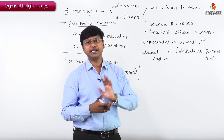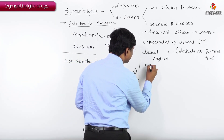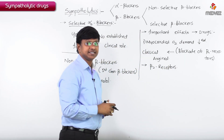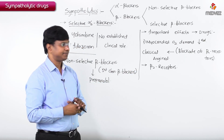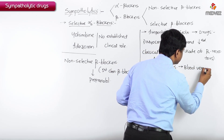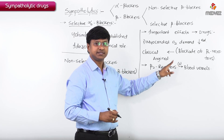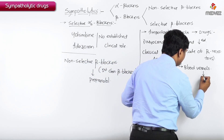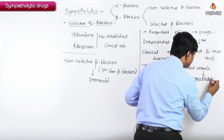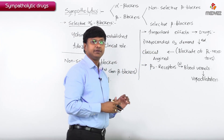The disadvantage with non-selective beta blockers is that they will not only block the beta 1 receptors but also block the beta 2 receptors. Beta 2 receptors are present within the blood vessels, and when beta 2 receptors are stimulated there will be vasodilatation.